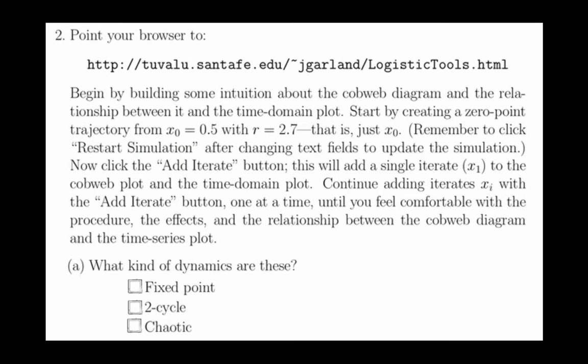Question 2a asks us to use the Cobweb Applet to add one iterate to a Cobweb Diagram starting at initial condition 0.5 using a parameter of 2.7. From this, we want to analyze what kind of dynamics comes out and compare this with our knowledge of the time series plot to determine the dynamics.